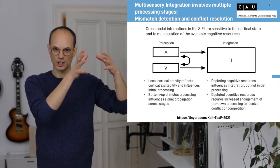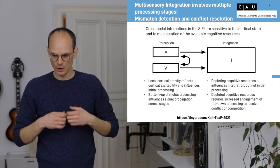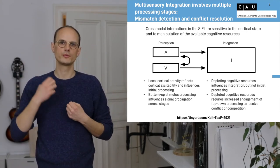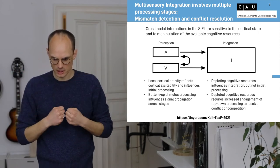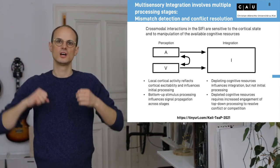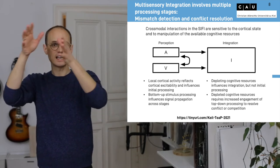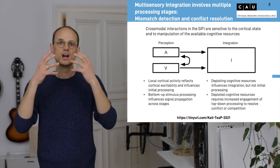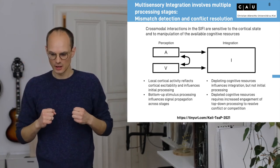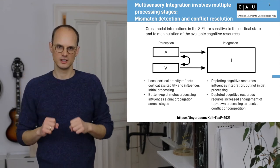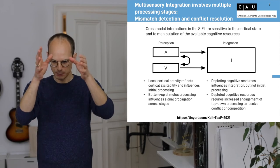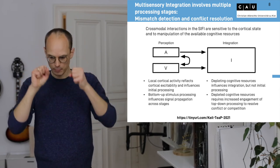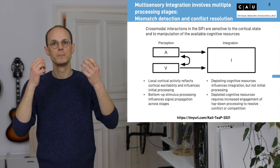In the first perception stage, local cortical activity reflects local cortical excitability and influences the initial processing of auditory and visual streams. Bottom-up stimulus processing then influences signal propagation across subsequent processing stages. In the second integration stage, depleting cognitive resources influences what we do with this incoming information — it influences multisensory integration but not initial stimulus processing. Depleted cognitive resources require increased engagement of top-down processing to resolve the conflict between auditory and visual information.